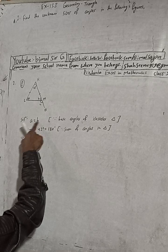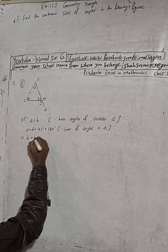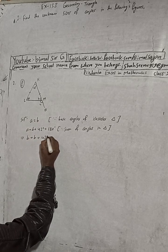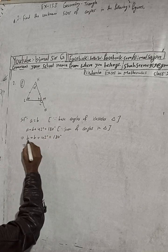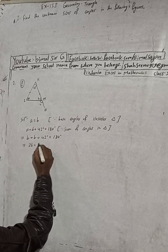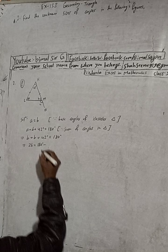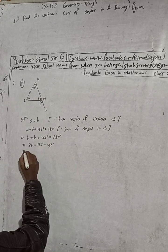In place of A, let's use B. So B plus B plus 42 degrees equals 180 degrees. You can see B plus B gives 2B, so 2B plus 42 equals 180.